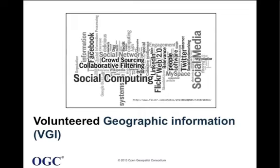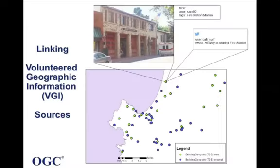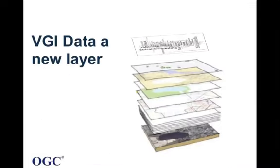Another topic I want to touch on is what we did with volunteered geographic information. VGI, or volunteered geographic information, is crowdsourced data that can be seen as another layer in GIS — a geographic information system — where you have basemaps, vector data, and other kinds of data. It is nice to think that we can have this crowdsourced data as an additional layer.